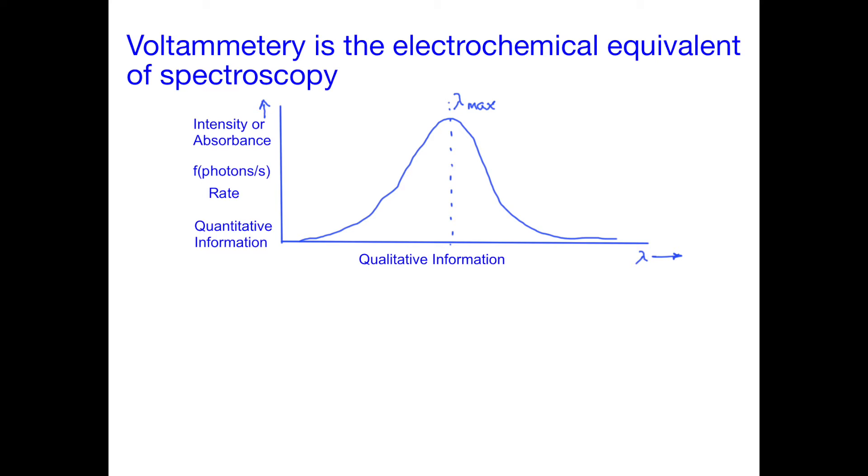Now let's consider a voltage scan. We'll plot the energy going into the system as the applied voltage on the electrode. We'll plot the current response in the vertical direction. Current is measured in charges transferred per second, so like intensity, current is a measure of rate. Therefore, we're also getting quantitative information from the vertical axis.